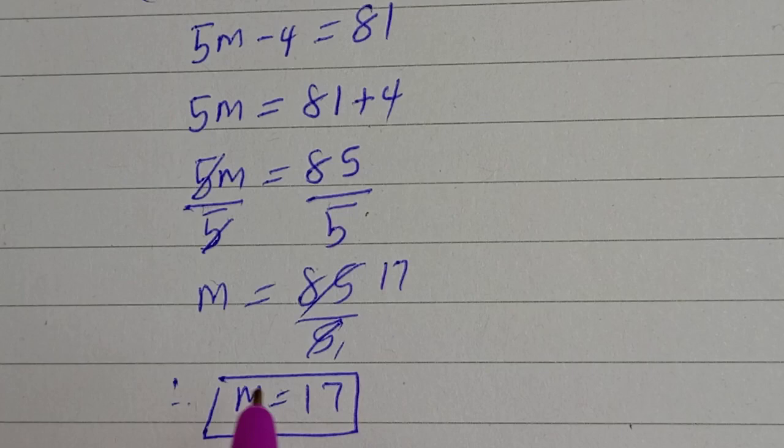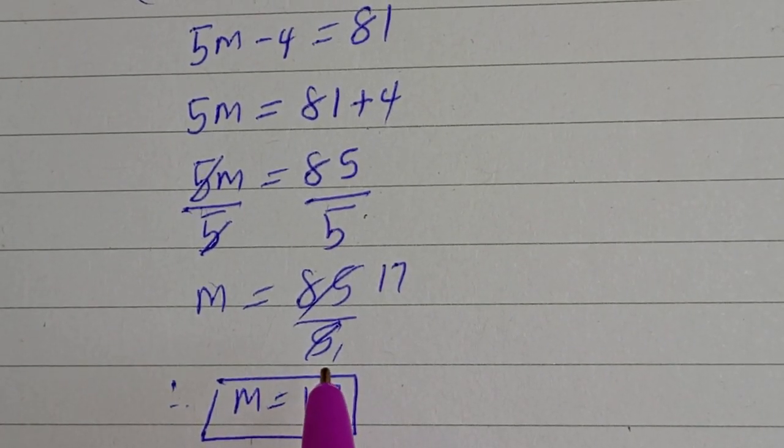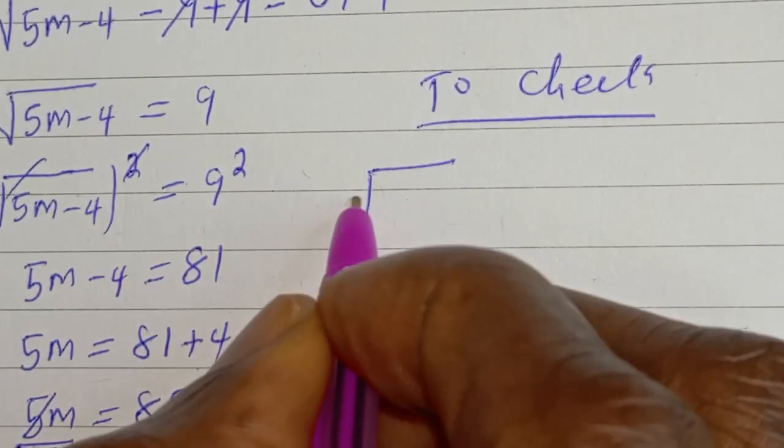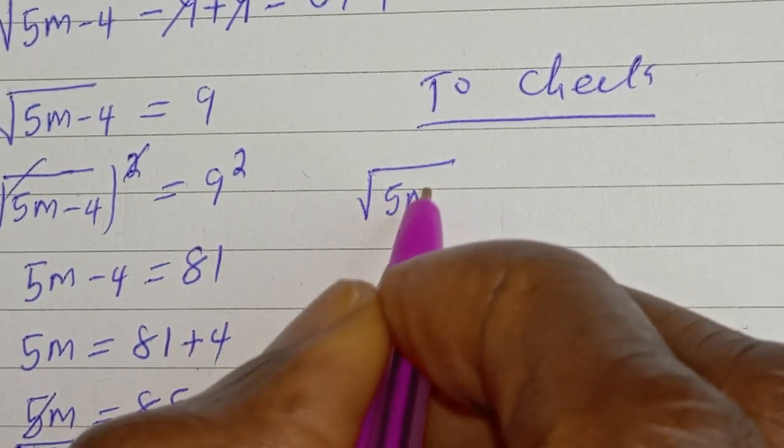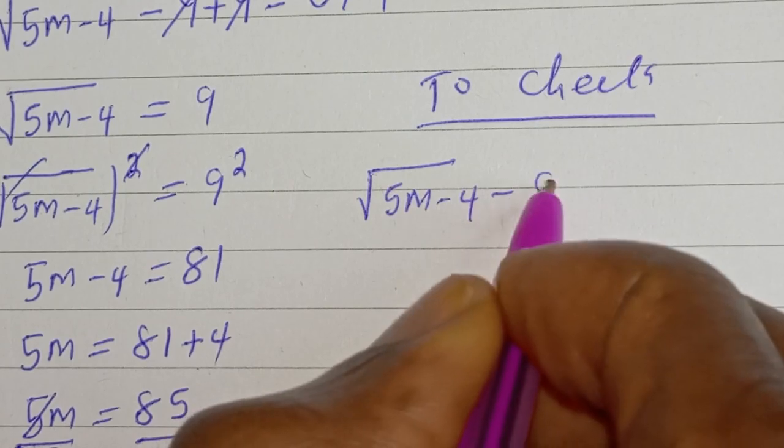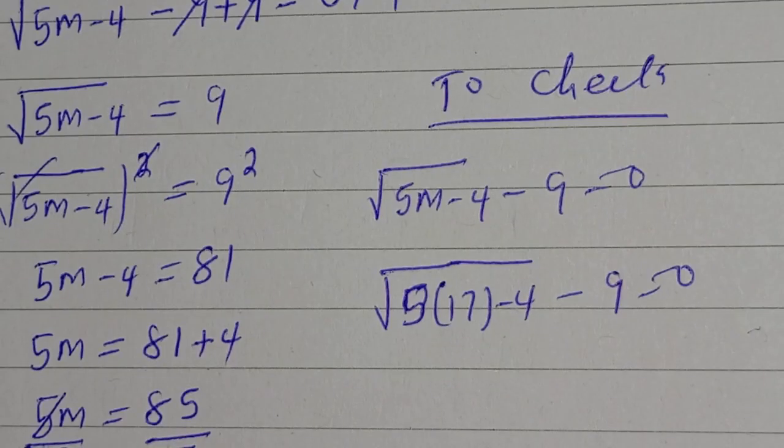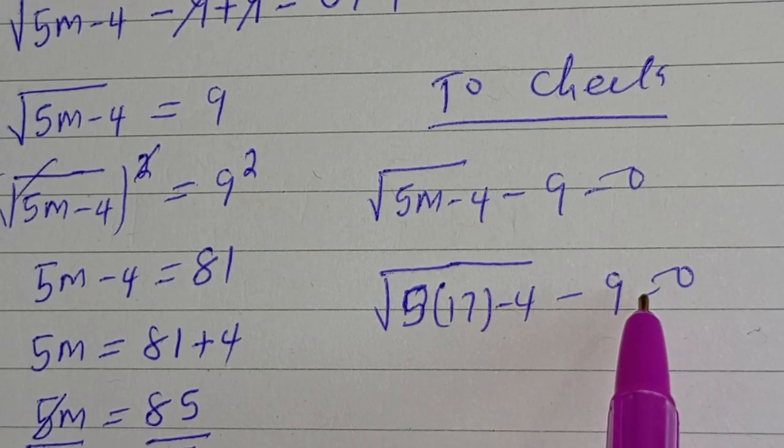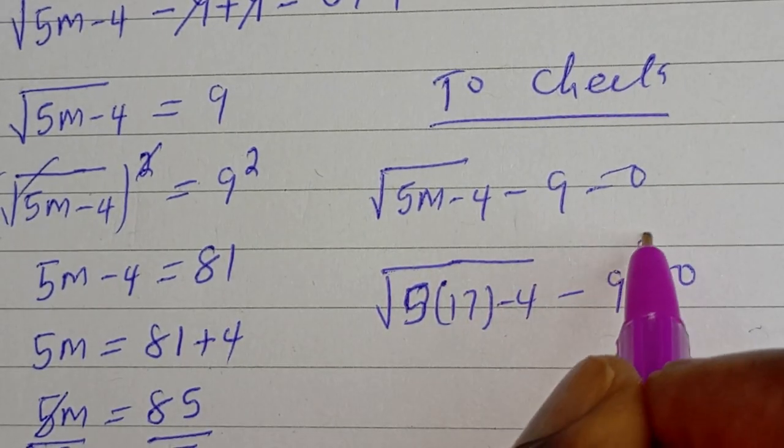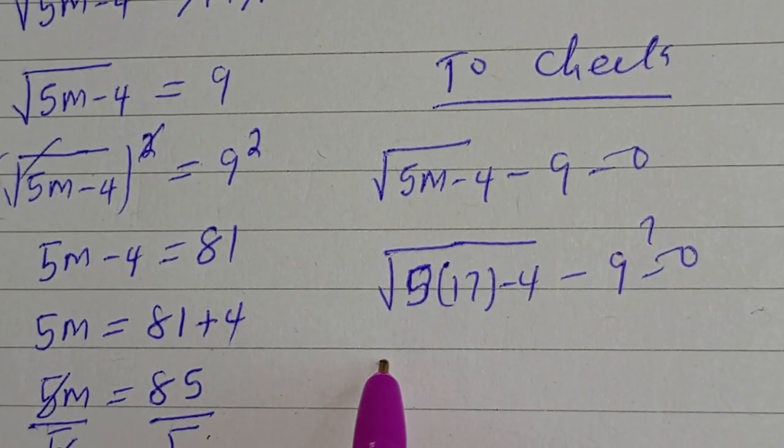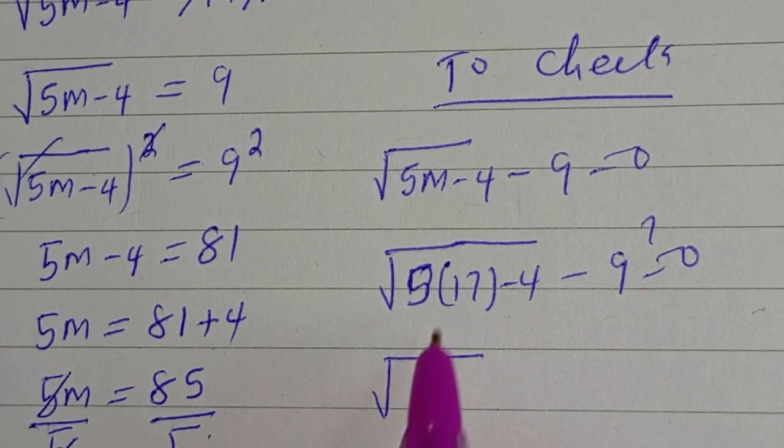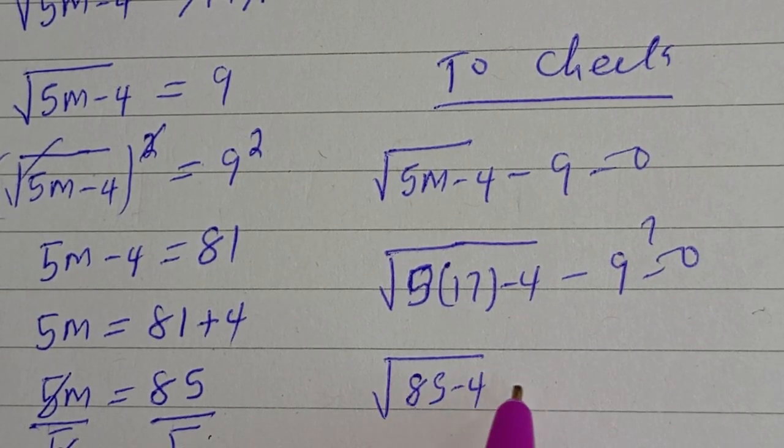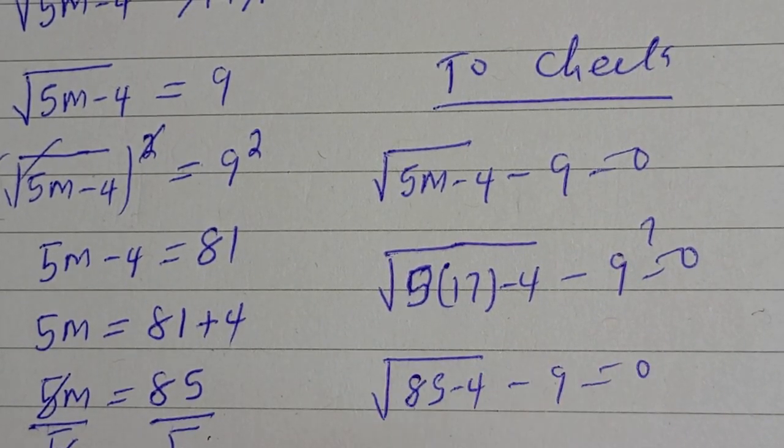We can check to confirm if this answer is right or wrong. Let's check. To check, we have square root of 5m minus 4 minus 9 is equal to 0. Square root of 5 bracket 17 minus 4 minus 9 must be equal to 0. Then square root of 7 times 5 minus 9 must be equal to 0.